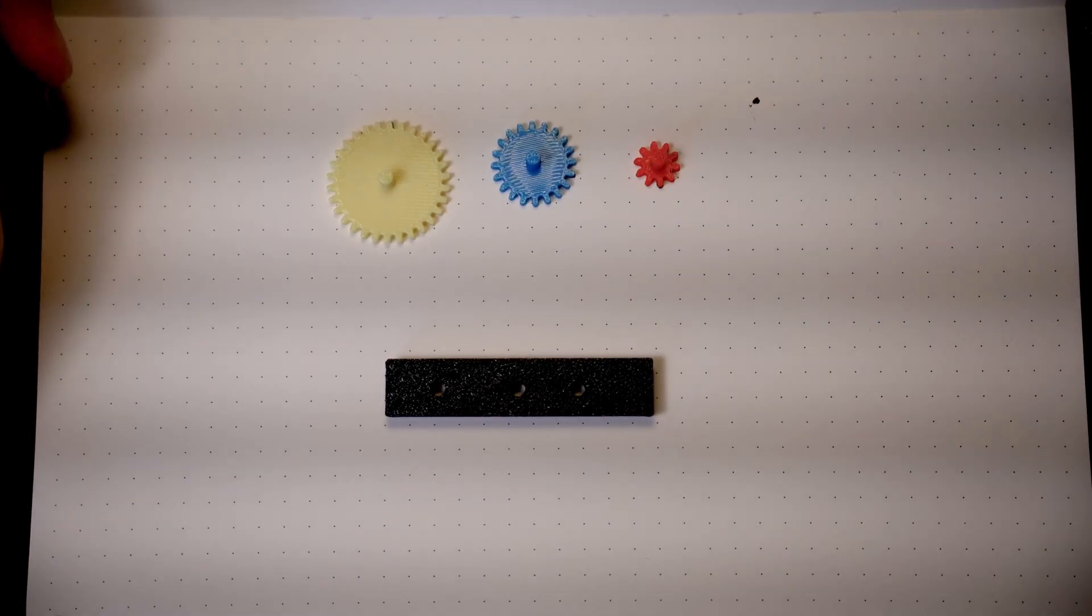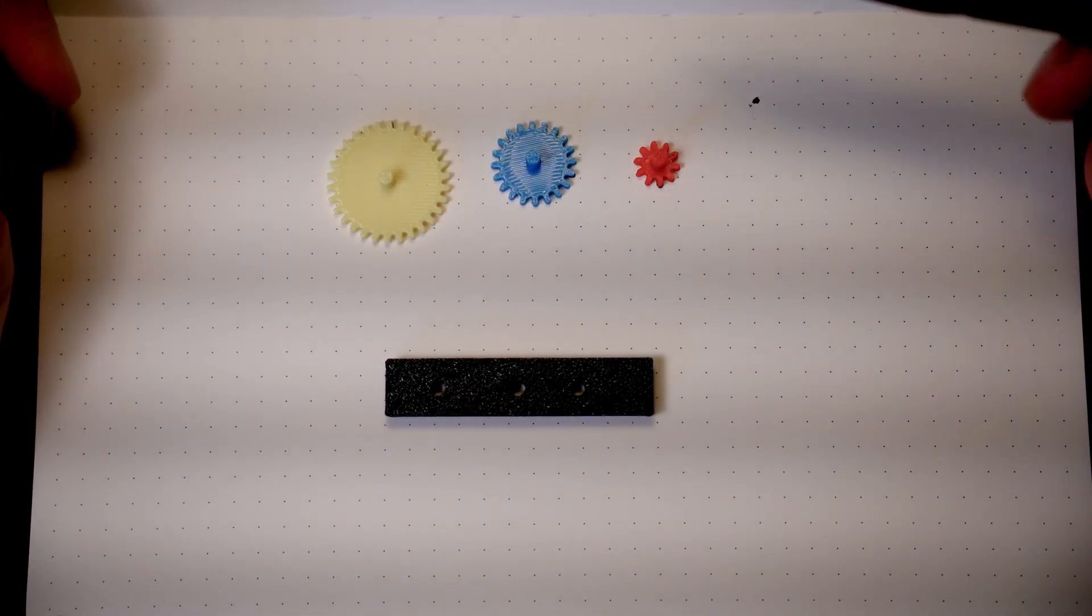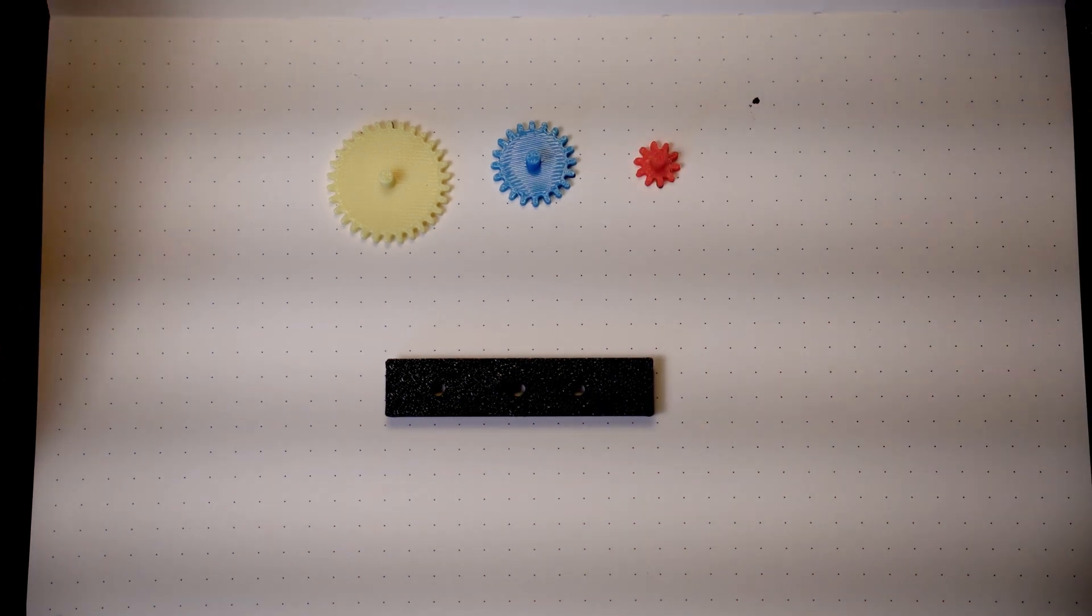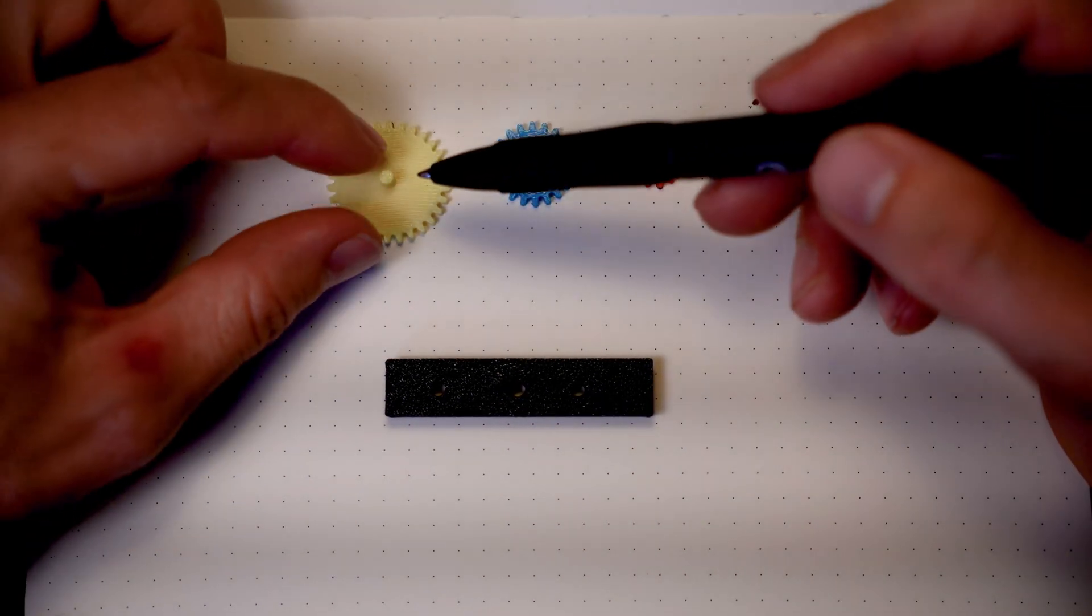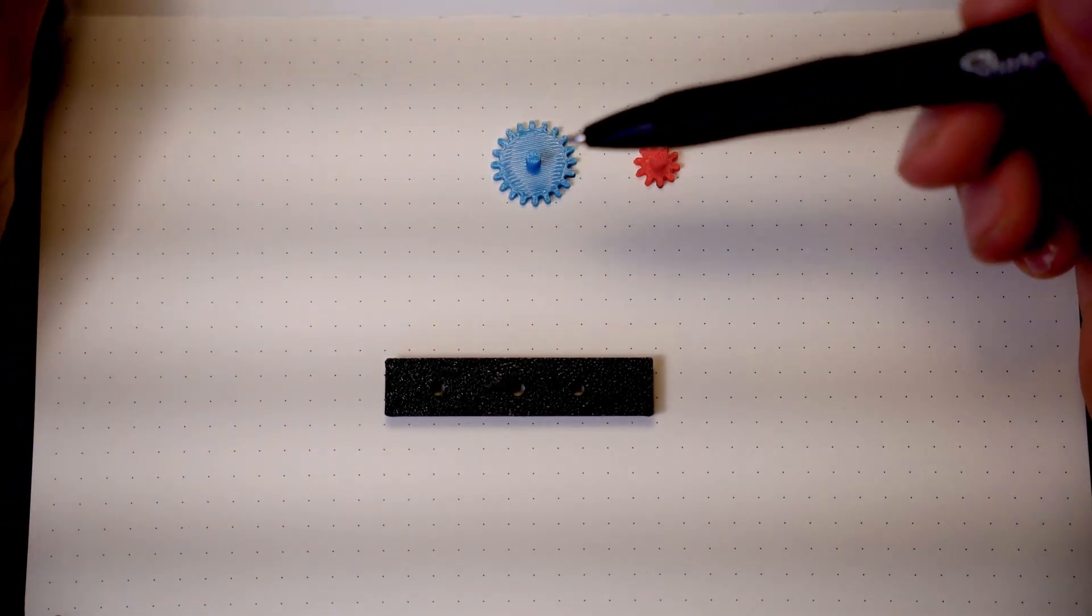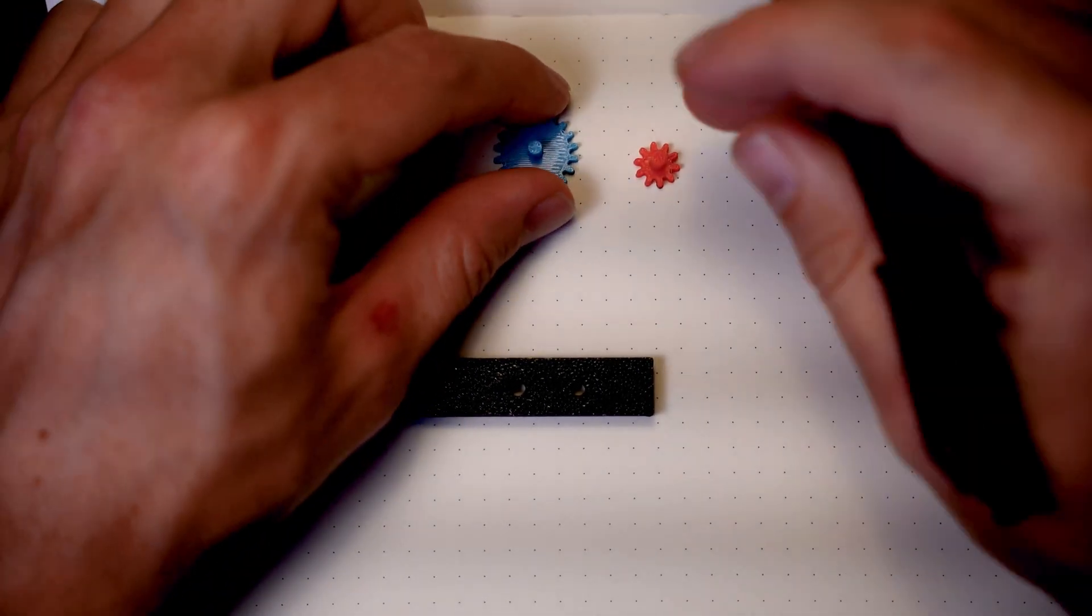When you're calculating a gear ratio, I like to calculate using teeth. It makes life a lot easier. But again, it's not really important which one you use, but we'll be using teeth for the rest of this. So we'll go ahead and put this 30-tooth aside for now. And we're going to focus on the 20-tooth and the 10-tooth gear.